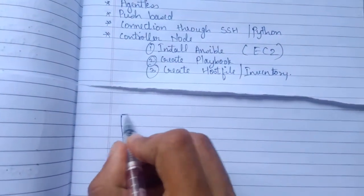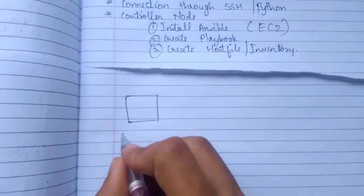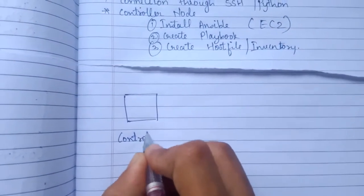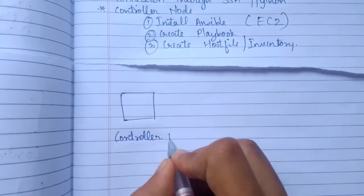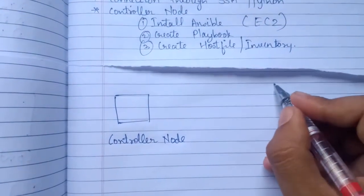So let's start. Actually you will have a single server or the main server which will configure all of our different servers. So this is known as controller node and this is the main server where you will be actually installing your Ansible.